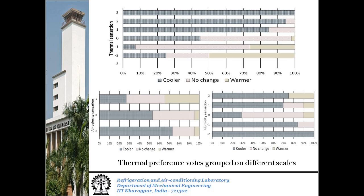Whenever humidity is not felt to be just right, most occupants want to be cooler. This may not always compromise the acceptability levels though, as has been seen in the earlier slide. But it does tell us about an interesting correlation occupants make between humidity levels and temperature.